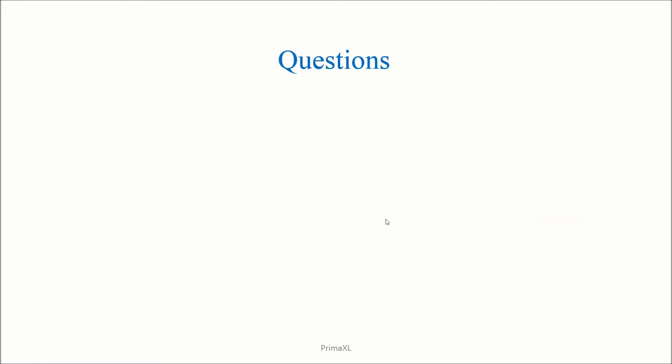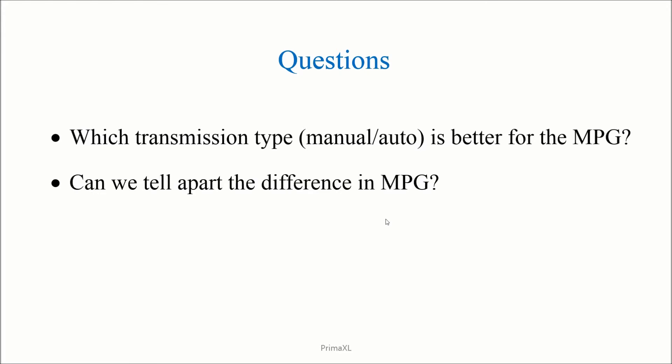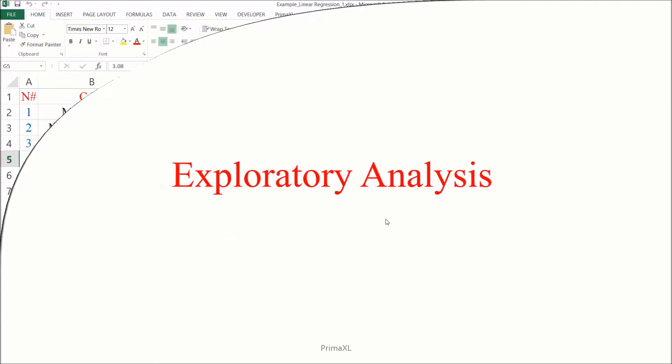Now, the questions we are asking about this data set are: which transmission type, manual or automatic, is better for the MPG? Can we tell apart the difference in the MPG? If so, by how much? Okay, let's do some exploratory data analysis.